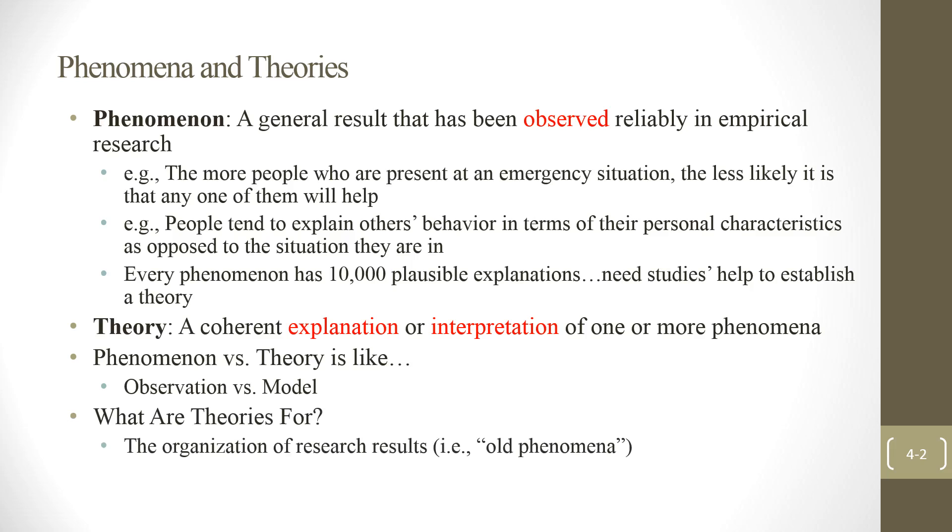Alright, so what are theories for? First, organization of research results. Also, prediction. This is one of the keys, the key functions of theory. Prediction of outcome in the new situation. So if the theory is correct, then it should work in a different situation. And finally, generating new research. We publish the results and attract more research.